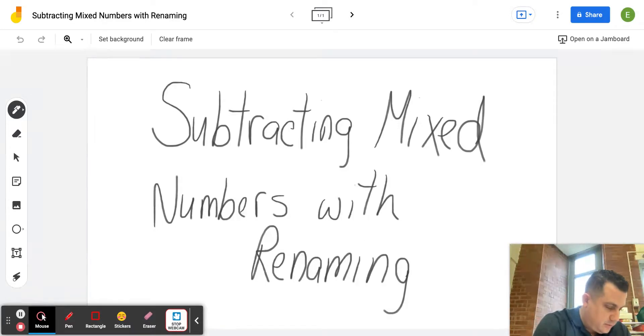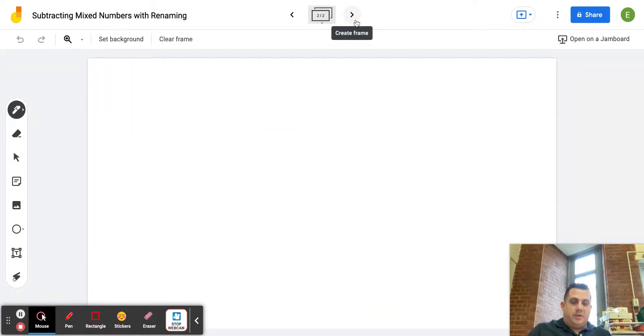All right, so let me turn the... there we go, a blank screen. Let me pick two problems off the top of my head. Let's do three and two-thirds minus one and four-fifths.